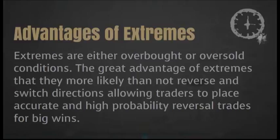Another example of a reversal would be when our asset is exhibiting signs of being overbought, meaning the price is higher than what it should be, and more likely than not it will slow down and head back downward in a bearish movement. When it comes to determining whether an asset is being oversold or overbought, we will more than likely be using one of two technical indicators.